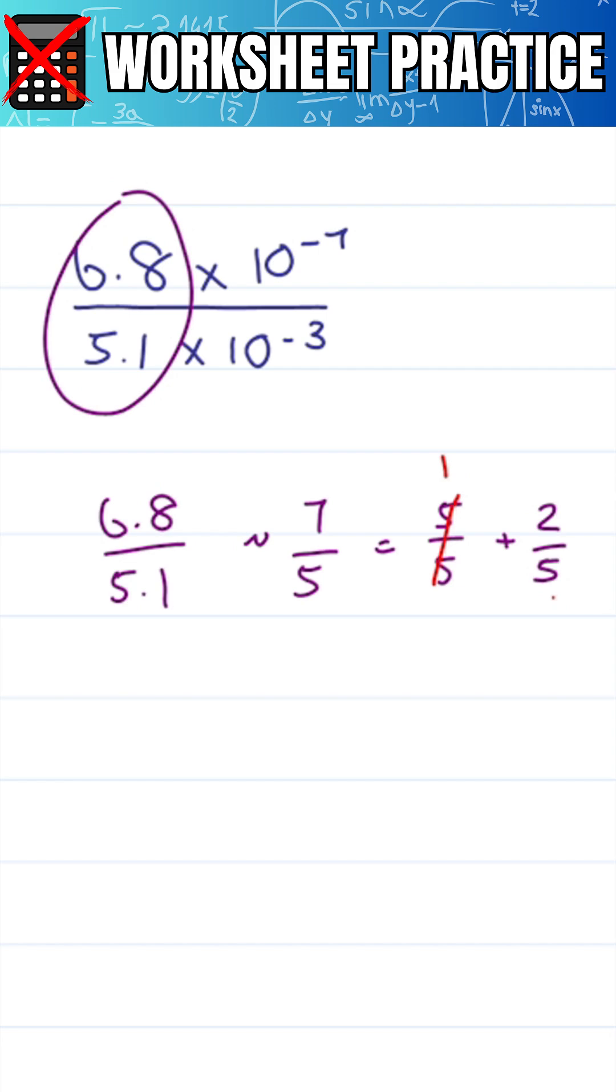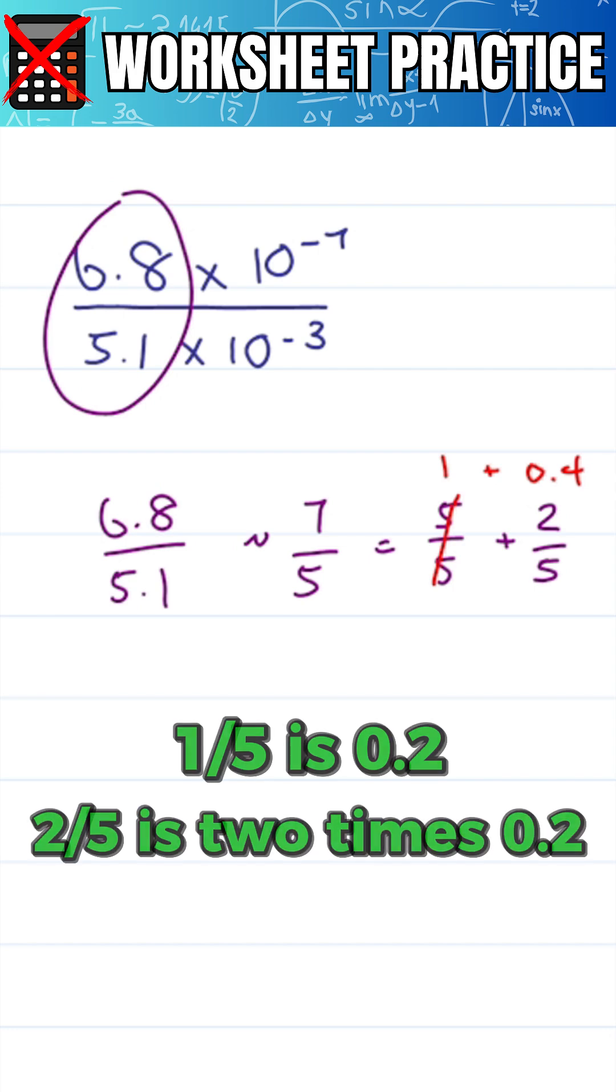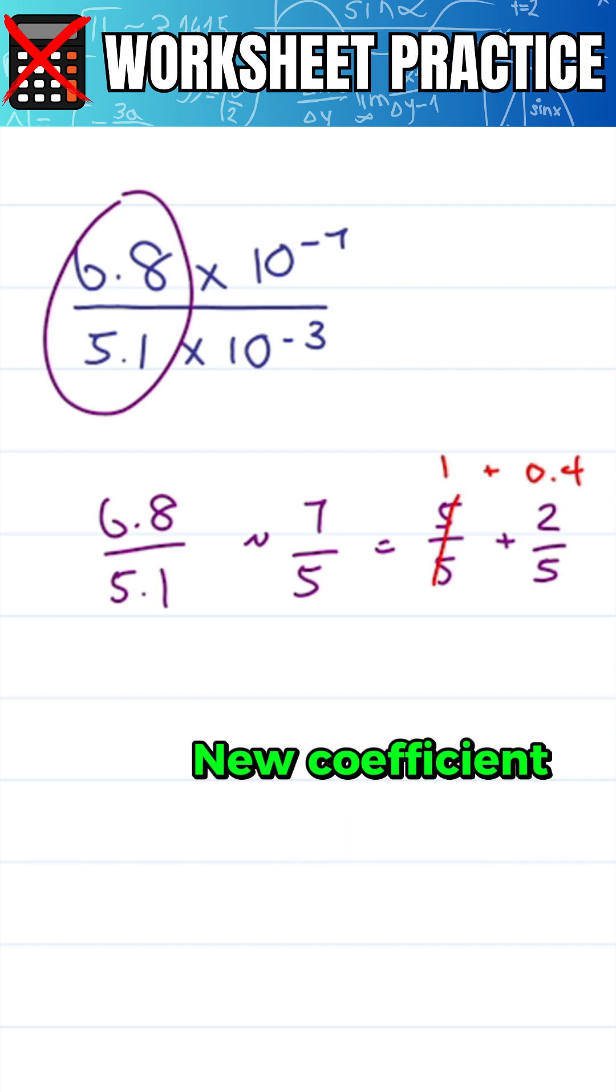2 over 5 you should recognize as 0.4 because you have to know 1 over 5 is 0.2, 2 over 5 is 2 times 0.2, which gives me a new coefficient of 1.4.